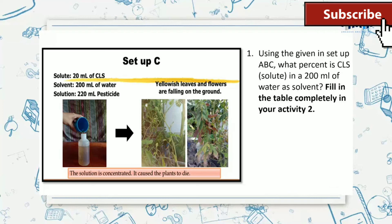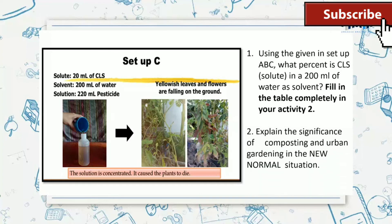Using the given in setup A, B, C, what percent is compost liquid substance in a 200 ml of water as solvent? Fill in the table completely in your activity number 2. Explain the significance of composting and urban gardening in the new normal situation.